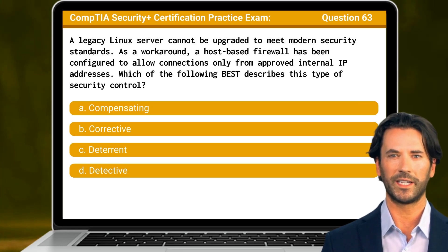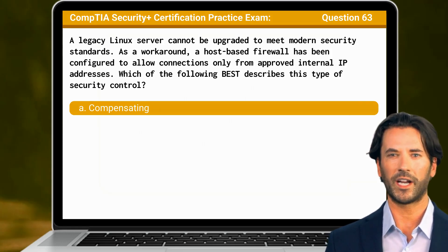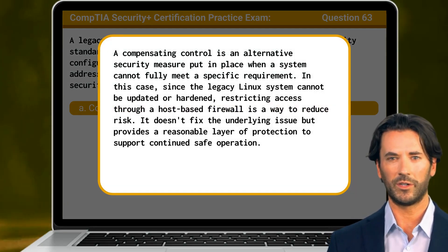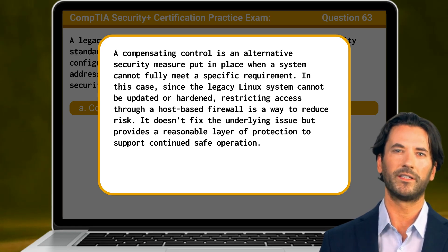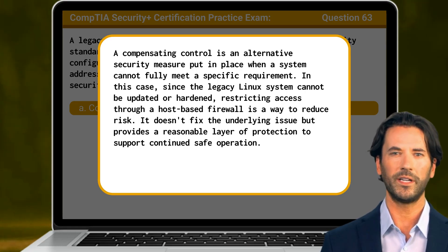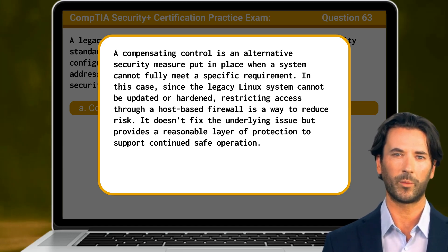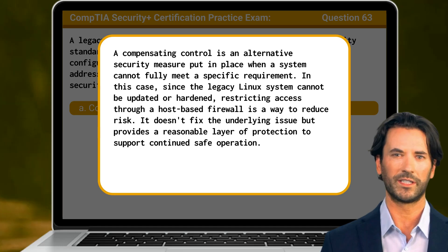The answer is A. Compensating. A compensating control is an alternative security measure put in place when a system cannot fully meet a specific requirement. In this case, since the legacy Linux system cannot be updated or hardened, restricting access through a host-based firewall is a way to reduce risk. It doesn't fix the underlying issue but provides a reasonable layer of protection to support continued safe operation.